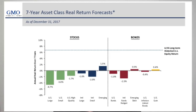First, let's look at GMO's seven year asset class real return forecast. This forecast looks at current asset valuations using various measures of return on capital relative to earnings multiples, then compares them to their average historical real returns over the following seven year period. The model currently predicts U.S. large cap stocks will return negative 4.7% after inflation over the next seven years. Bonds will return negative 1% and cash 0.4%. Only U.S. cash, emerging market stocks, and debt have positive — although very low — expected real returns over the next seven years.